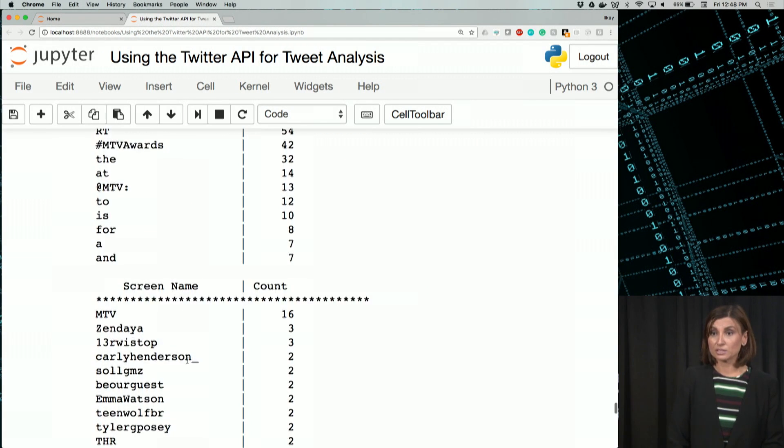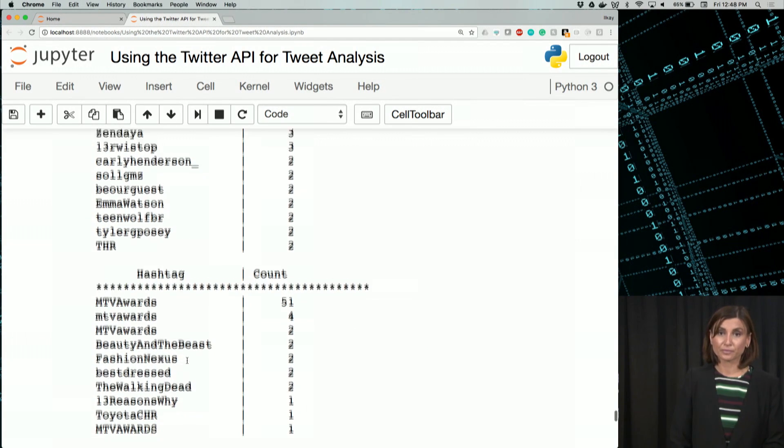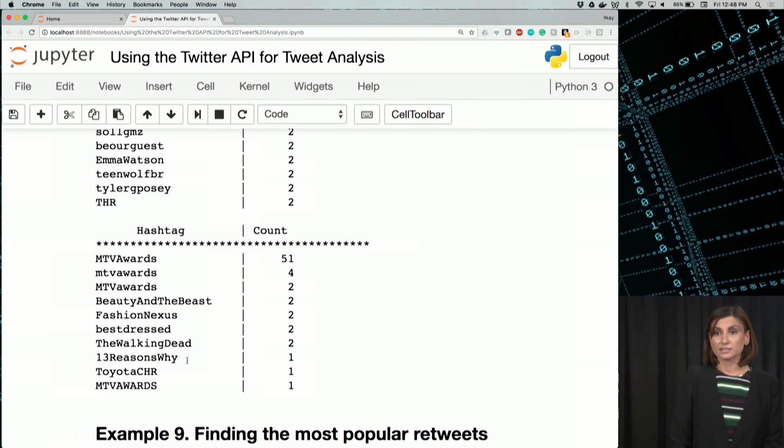Similarly, for screen names, it's a little bit easier to read. And hashtags, how many times a hashtag was mentioned in the set of tweets that we got back. So out of 58, the unique records, we can make sense of these numbers a little bit.